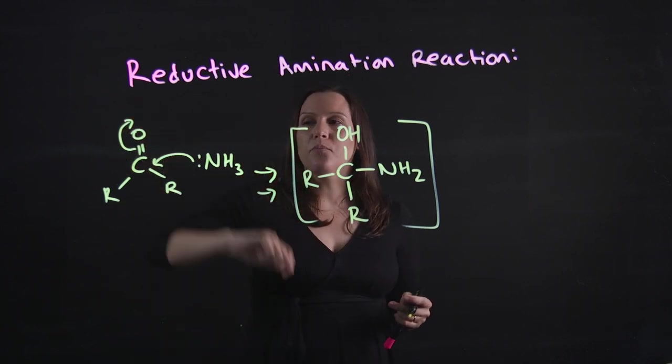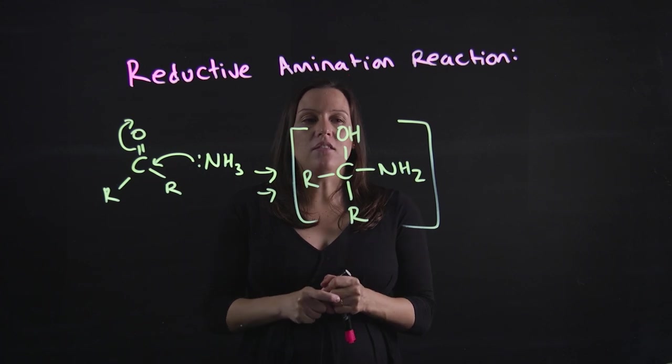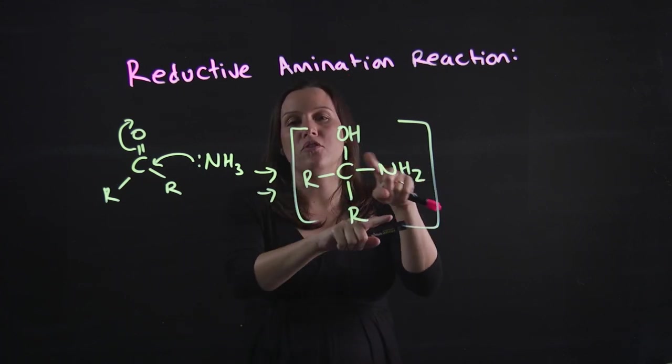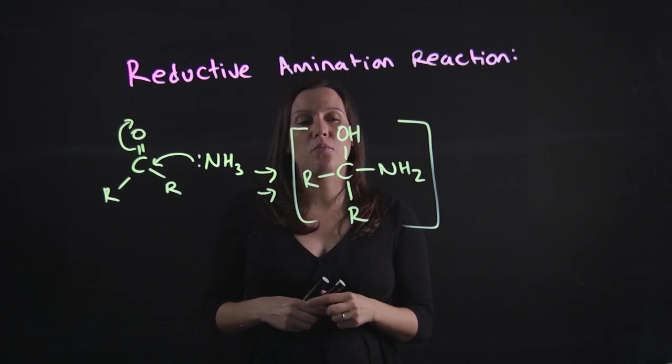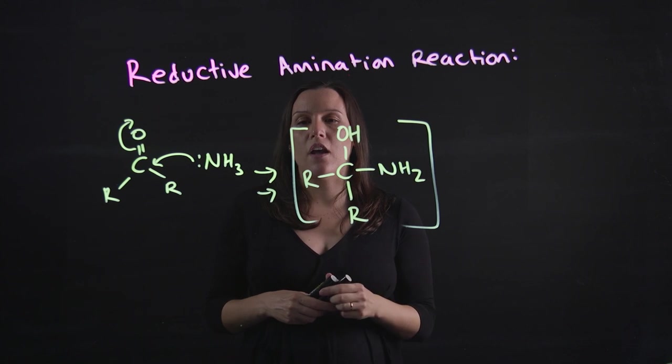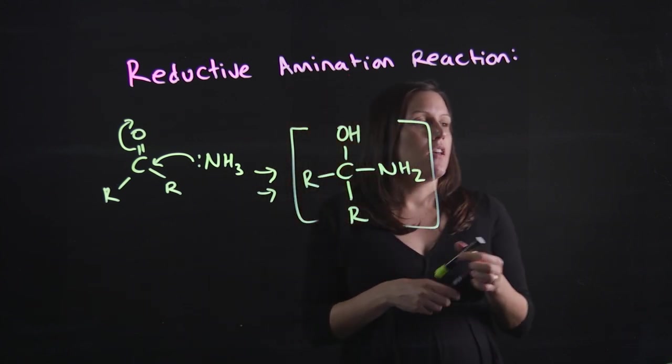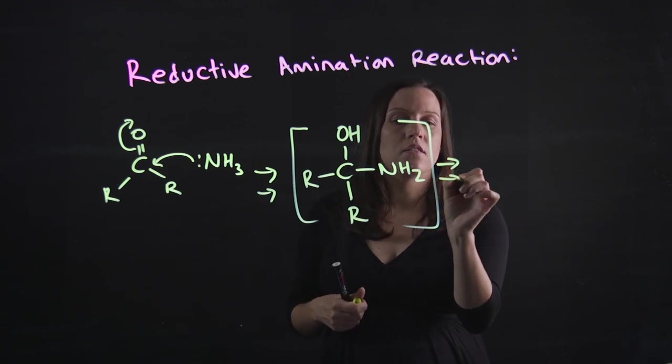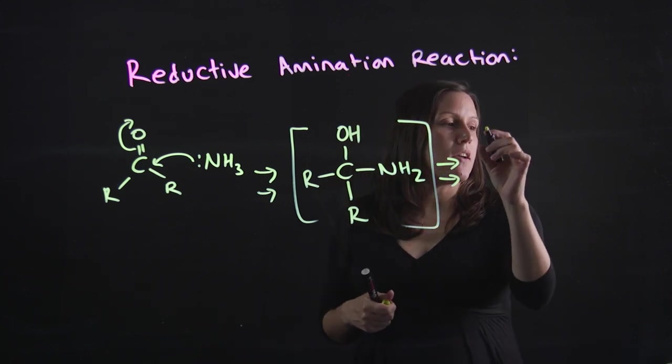So when this opens up we can pick up a proton. I've just drawn two arrows to indicate that we've had two proton transfers - a proton transferring to the oxygen and a proton being removed from that nitrogen rather than drawing out the whole mechanism. The next one involves two more proton transfers. I'll just do two little arrows again and we're going to form our imine intermediate.